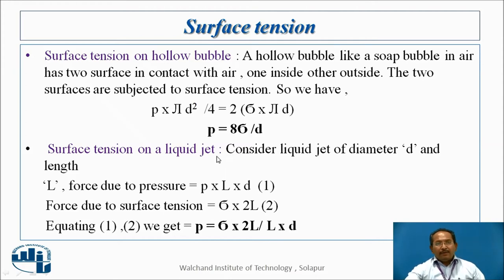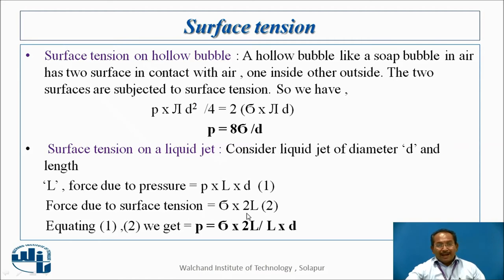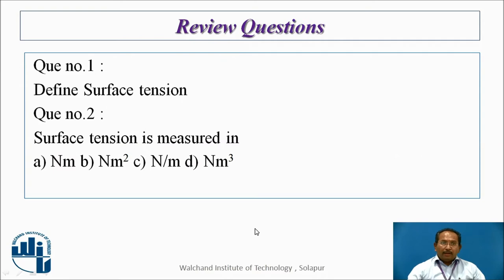Similarly, for a liquid jet, consider a liquid jet of diameter D and length L. The pressure force is P × L × D. The force due to surface tension is sigma × 2L. Equating these two, we get P = 2σ / D. These are the derivations you can use to answer related questions.